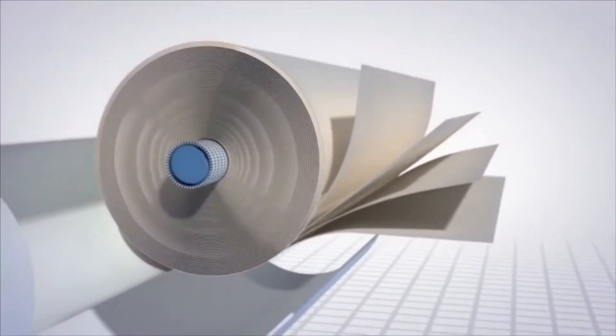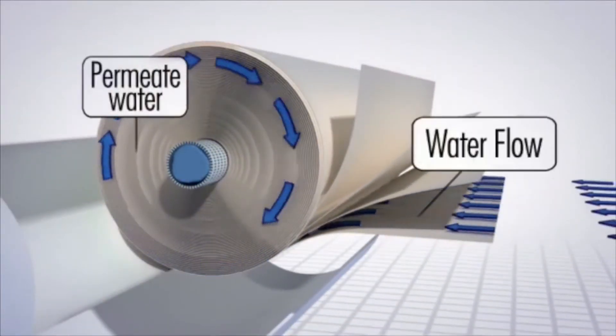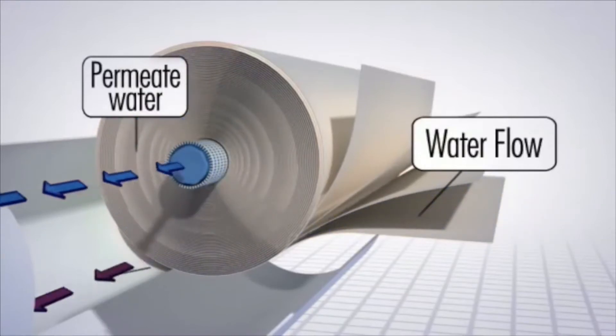Two streams of water are produced. Pure clean water or permeate flows across the membrane sheets and passes through the membrane layers to the inside core tube.